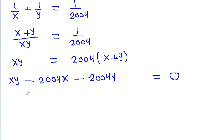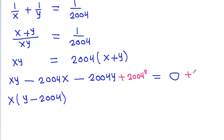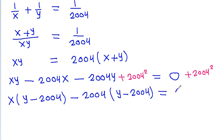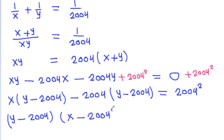And here if we take x common, then we get x(y - 2004). And for y - 2004, if we add 2004² to both sides, then if we take -2004 common, we can factor this as (y - 2004)(x - 2004) = 2004².